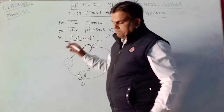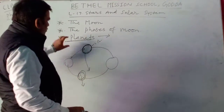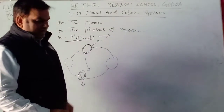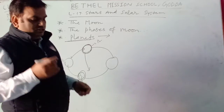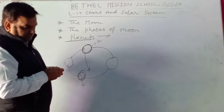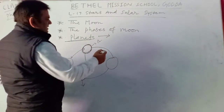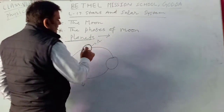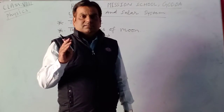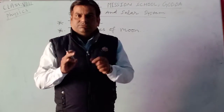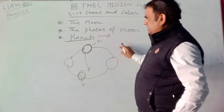Our planets are divided into two parts: terrestrial planets and Jovian planets. The first four planets — Mercury, Venus, Earth, and Mars — are known as terrestrial planets.